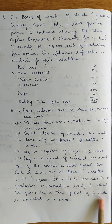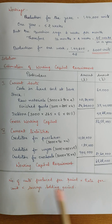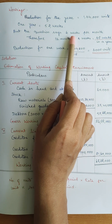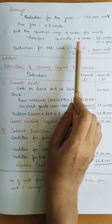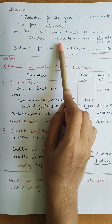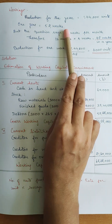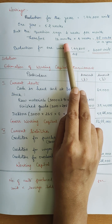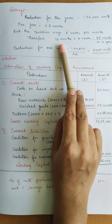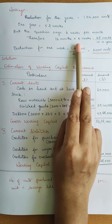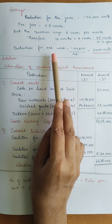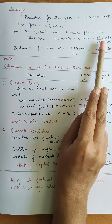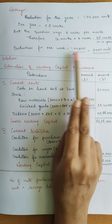Assume that production is even and 1 month is 4 weeks. So 1 year is 52 weeks normally, but here 1 month is 4 weeks, so 1 year is 12 into 4 = 48 weeks. Production is 1,44,000 units per year. So 1 week production = 1,44,000 divided by 48 = 3,000 units. So 1 week, 3,000 units.